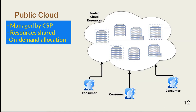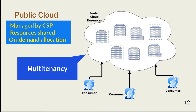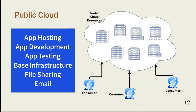According to VMware, a public cloud is an IT model where on-demand computing services and infrastructure are managed by a third-party provider and shared with multiple organizations using the public internet. In other words, a public cloud is a pool of computing, storage, and network resources located at and managed by a CSP. The resources are shared by any number of consumers in an approach known as multi-tenancy. Public cloud resources are commonly used for application hosting, application development, application testing, base infrastructure hosting, file sharing, and email services.